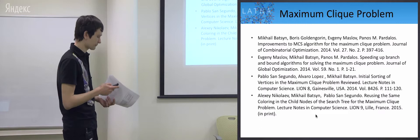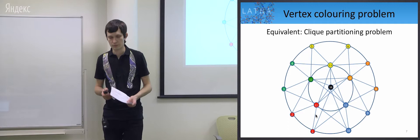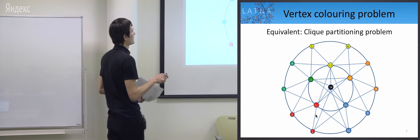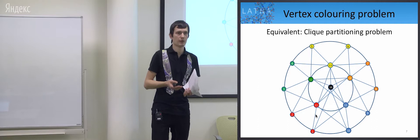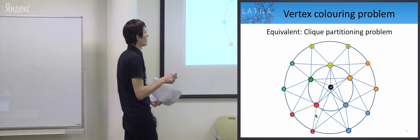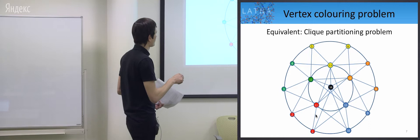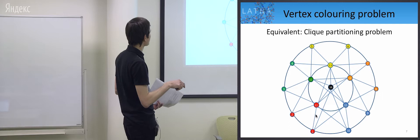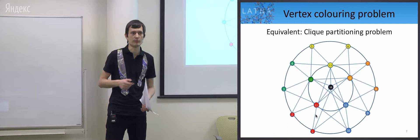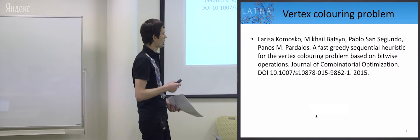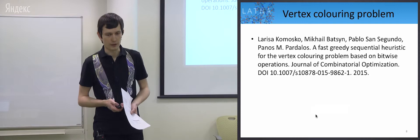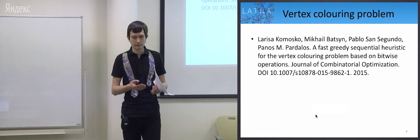Next is the vertex coloring problem, which we also worked on a little. An equivalent problem is clique partitioning — you want to partition into the minimum number of cliques. In coloring problems, you want to partition into the minimum number of independent sets where vertices are not connected, but we can reformulate it as clique partitioning where vertices are connected. For this problem we developed a heuristic based on bitwise operations, which is very efficient on modern computers because in one operation we process 64 vertices on a 64-bit architecture.